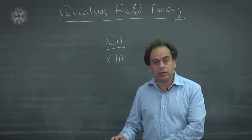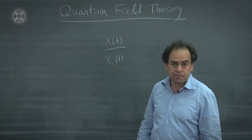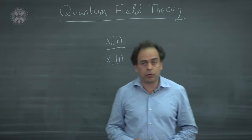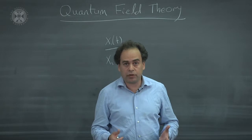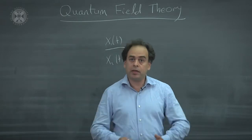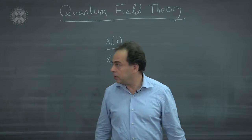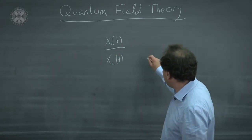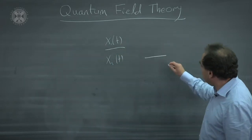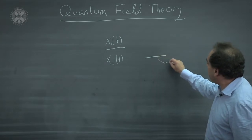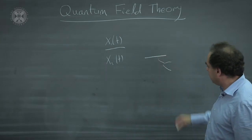It is precisely this idea, that this number is fixed, that we have to abandon when we go to study quantum field theory. The basic reason for that is that pair creation in quantum field theory is part of what happens. For example, if we start with one particle, at some later moment in time, we may end up with three, because a pair has been created.